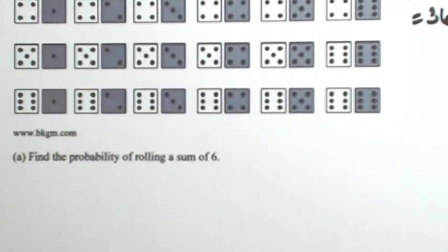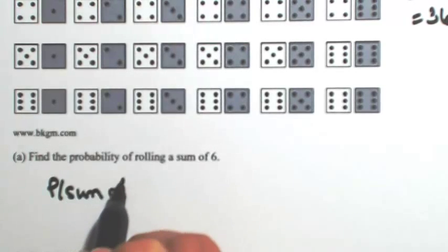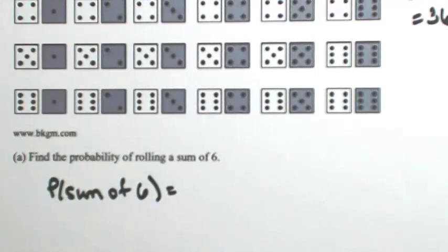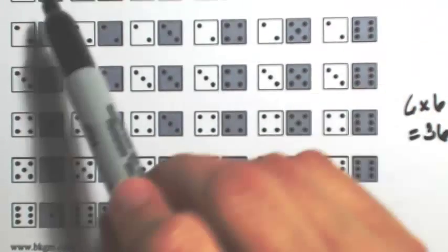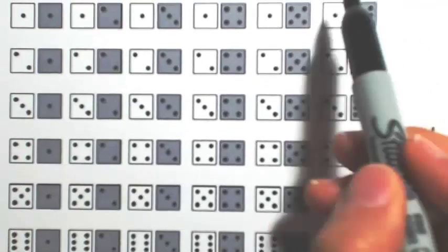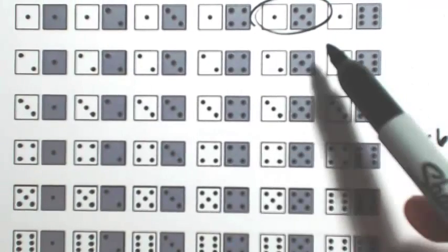In this first example, let's find the probability of rolling a sum of six. So if we look at all of our possibilities, let's go through and figure out which ones give us six. I'm going to start in the first row here. One and five, that'll work. So that's a six.